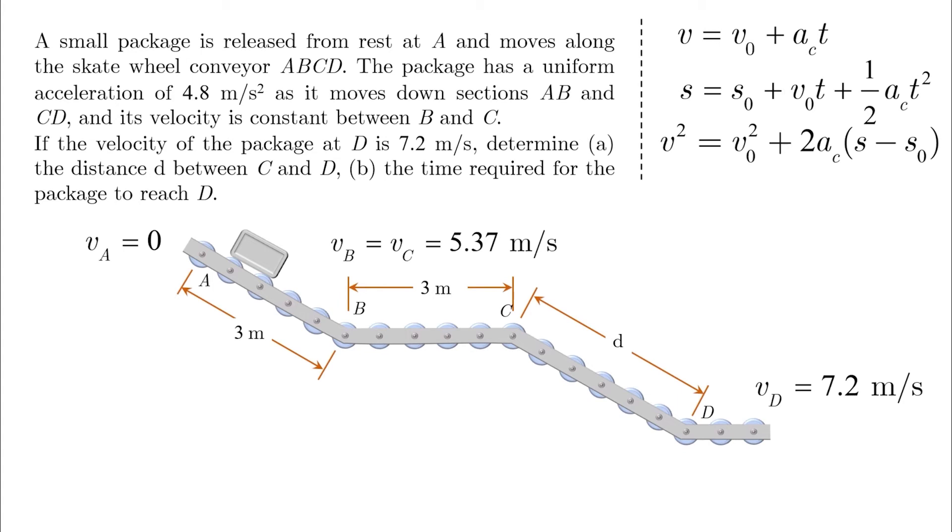For the first section, the velocities at A and B are given, and the acceleration between A and B is also given. So we can use the first equation to find the time as follows, and the result is TAB equals 1.12 seconds.